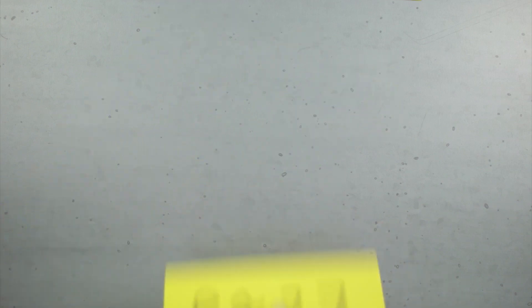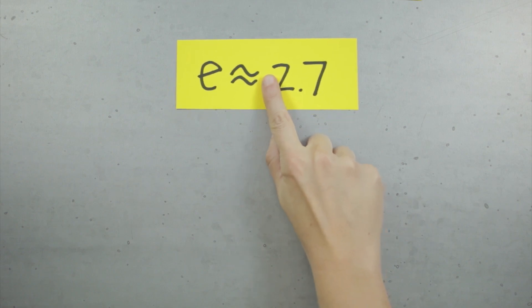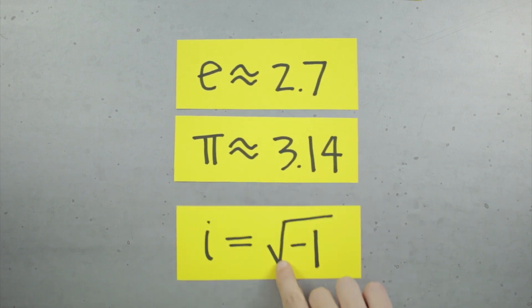The exponential number is about 2.7, and pi is about 3.14. Well, the imaginary number i is very specifically the square root of negative 1.